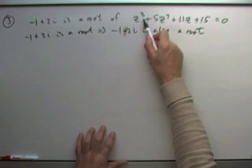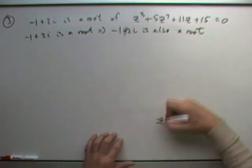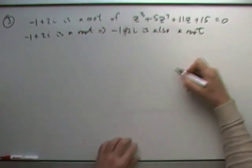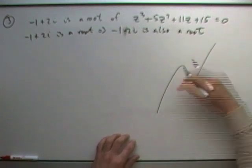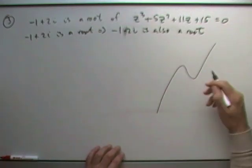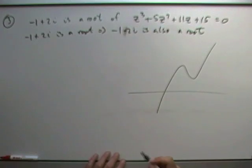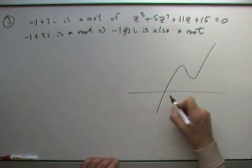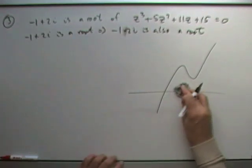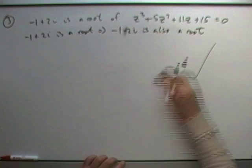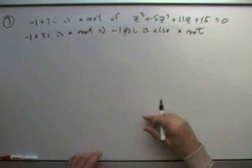If you've got an odd-powered polynomial, you know that the graph has to start with a positive first term — it has to start below, do however many terms it takes — in this case just 2 — and then pass above. It's got to pass through the axis, so there's got to be a real root.